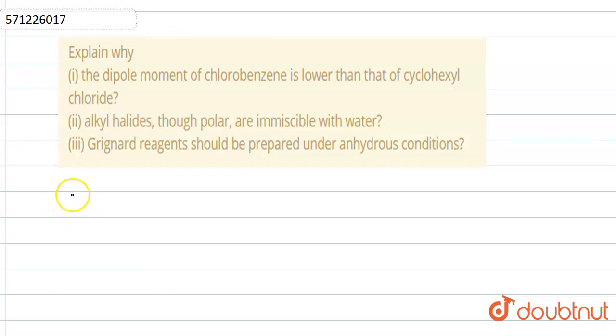Hello, we are given three parts of this question. First, we will solve the first part. The dipole moment of chlorobenzene is lower than that of cyclohexyl chloride. So, what is chlorobenzene? This is the structure of chlorobenzene and this is cyclohexyl chloride.